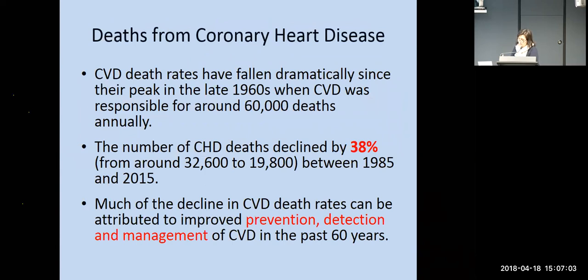Despite all that sounding very gloomy, we know that cardiovascular disease deaths have actually fallen dramatically since the 1960s. At that stage, diseases including stroke and heart attack would account for about 60,000 deaths annually, compared with less than 20,000 nowadays. It particularly dropped by nearly 40% between 1985 and 2015 — that 30-year period. Much of that decline is because we are better at preventing these diseases in the first place, detecting them and managing them in the early stages.